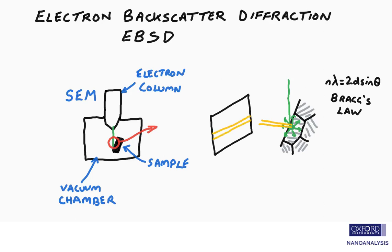And if we insert a detector close to the sample, we can image those diffracted electrons, and they impinge on the detector to form pairs of lines, or Kikuchi lines, and the bands are called Kikuchi bands.